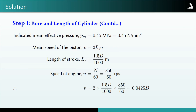PM is the indicated mean effective pressure: 0.45 MPa or 0.45 N/mm². V is the mean piston speed equal to 2 × Ls × N. From the Ls/D ratio, Ls is 1.5D/1000 metres. The engine speed N is 850/60 RPS. Substituting, the mean piston speed V is 0.0425D.